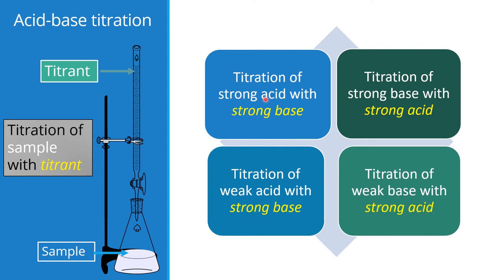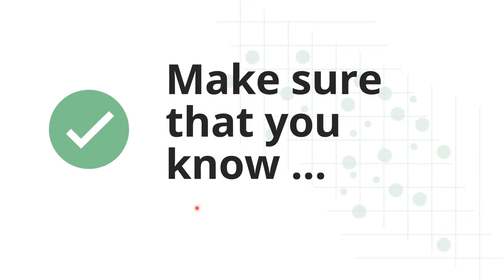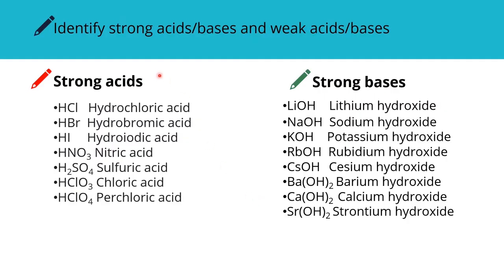We have strong acid as sample, strong base as titrant, and we keep the same titrant and change the sample. Before we move on, make sure that you know this: you should be able to identify strong acid or base from weak acid or base. If you can memorize the strong acids and strong bases, there are only seven strong acids and eight strong bases.